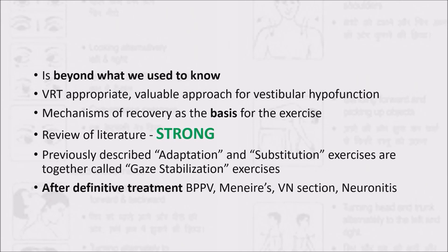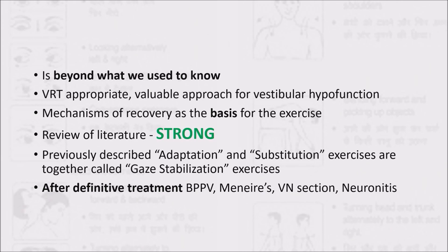There are some terminologies which have changed over the years. What we previously called adaptation and substitution is now grouped together as gaze stabilization exercises. Unilateral vestibular loss means you have a stable lesion to deal with. To have a stable lesion, you first have to give the definitive treatment required for the patient — whether it's BPPV, Meniere's, vestibular nerve section, or vestibular neuronitis.